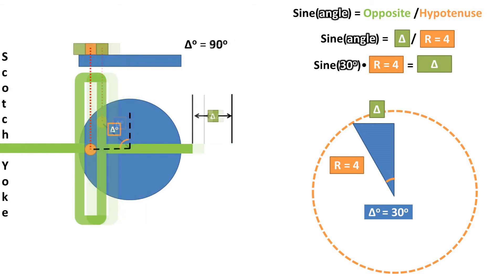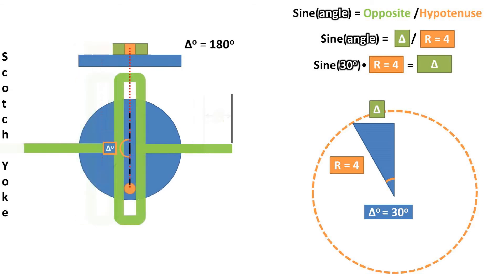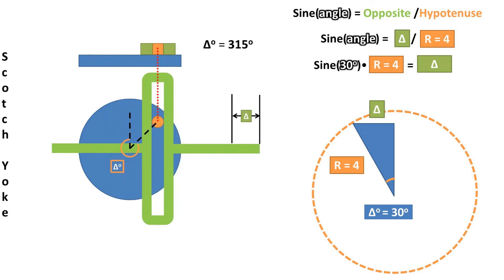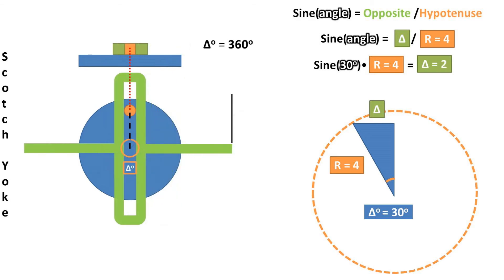We can rearrange this to be the sine of the angle times the hypotenuse, which is the radius, equals the change in yoke distance, or displacement. Plugging in our numbers, we get a distance of 2 units for the yoke displacement.